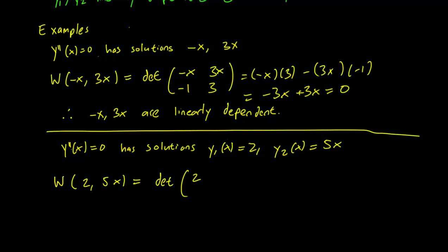So Wronskian of 2 and 5x is equal to the determinant. Again, we take the two solutions in the top row. The derivative of 2 is 0, so we have 0 over here. The derivative of 5x is 5.